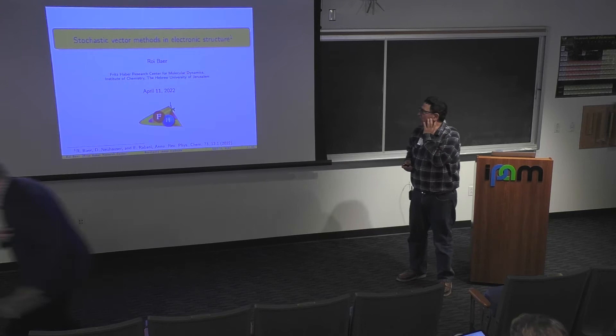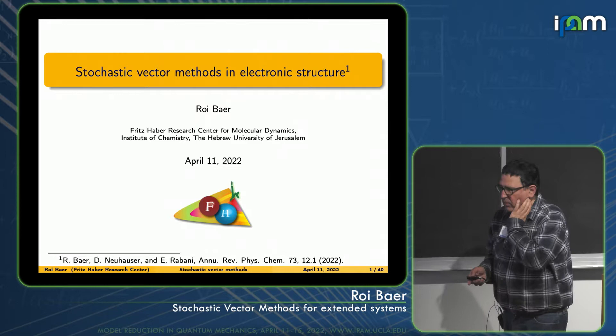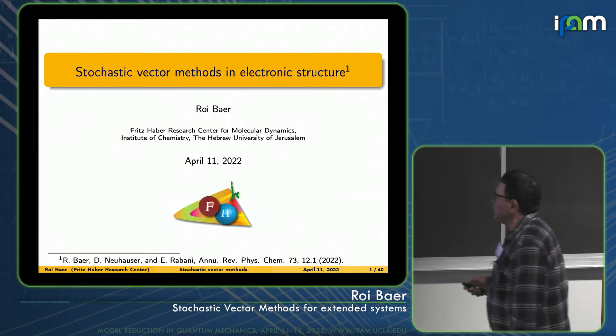Today I will speak about stochastic vector methods in electronic structure. We have a recently published annual review of physical chemistry on it, but what I will present here will be more broad than the annual review.